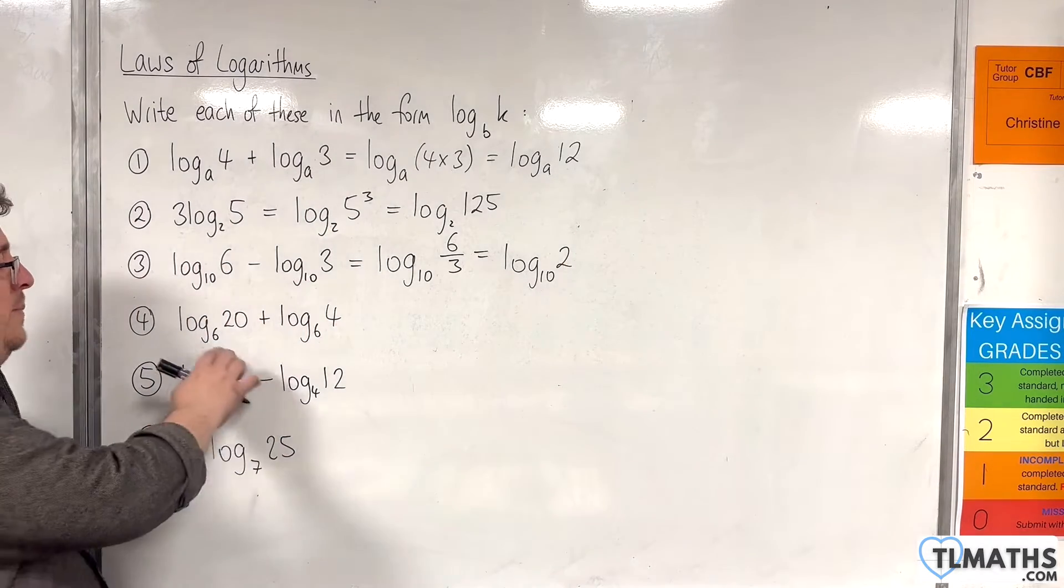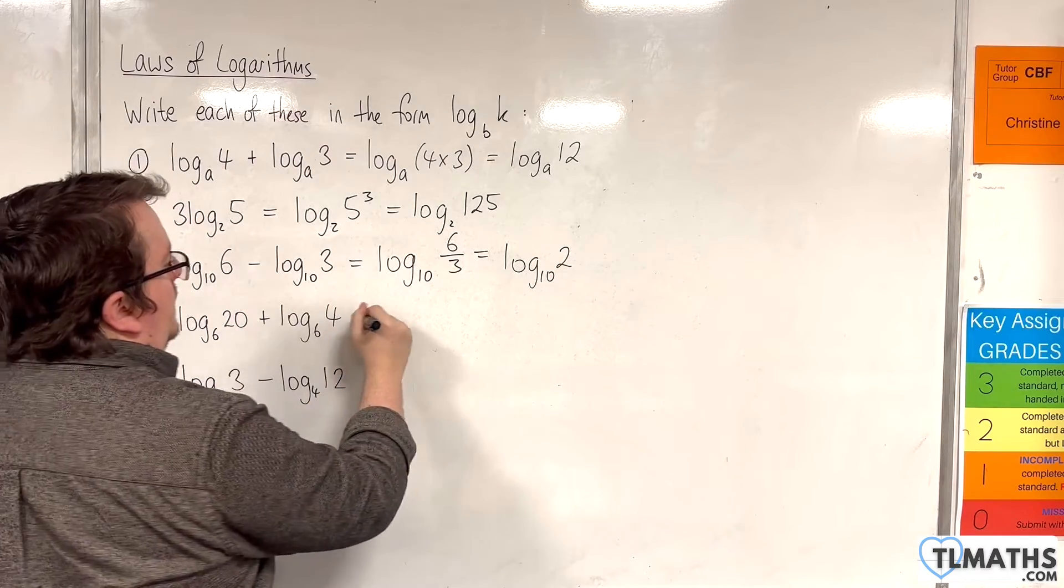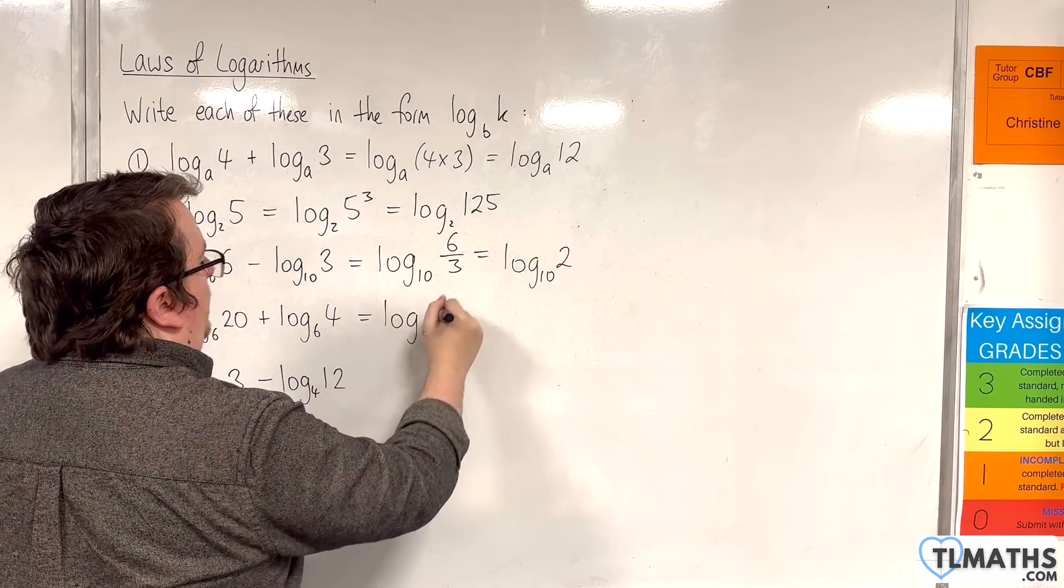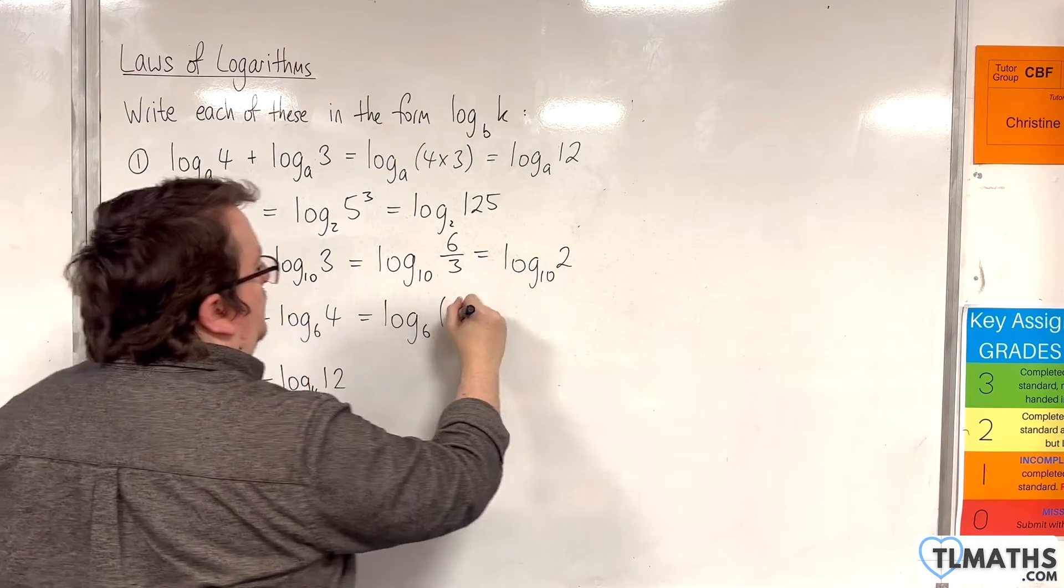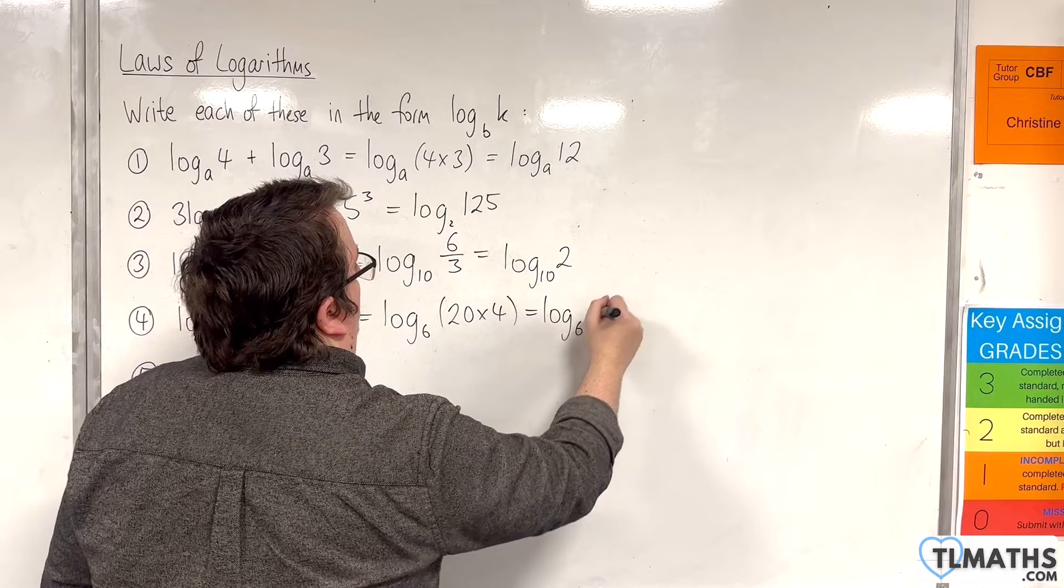Number 4, the base number is the same. We have an addition so we're going to use the product rule. And that would be log base 6 of 20 times 4. So log base 6 of 80.